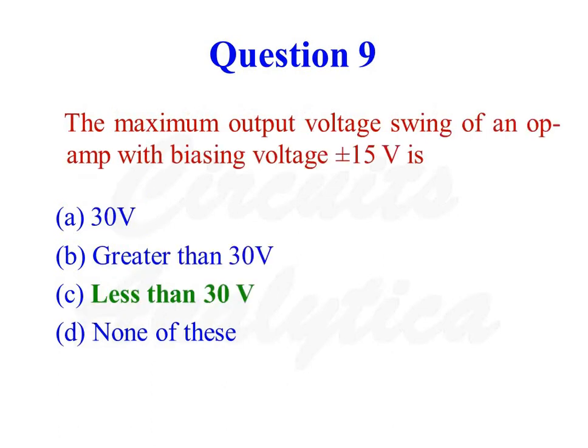The maximum output voltage swing of an op-amp with biasing voltage plus or minus 15 volts is less than 30 volts. So the correct answer is option number 3.